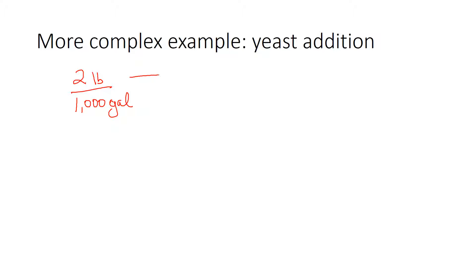Our measurement of weight in this case is pounds, and we need this to be in grams. And our measurement of volume is in gallons, and we need that to be in liters. We already know how much we're adding. We're adding two pounds per thousand gallons, right? So we know really how much we're adding for a certain volume.